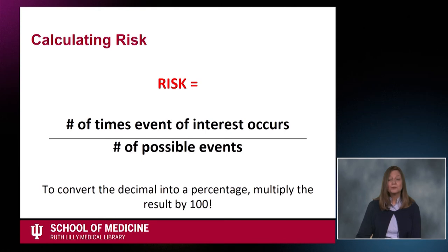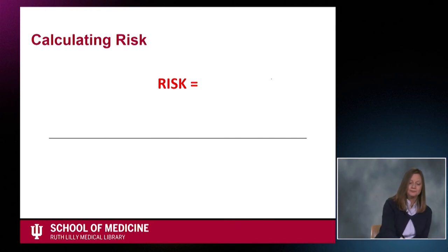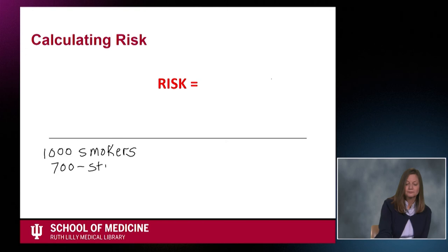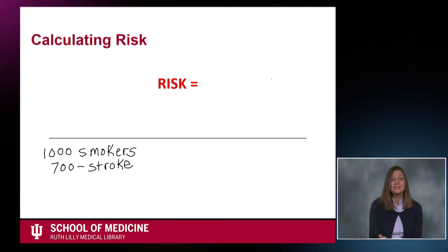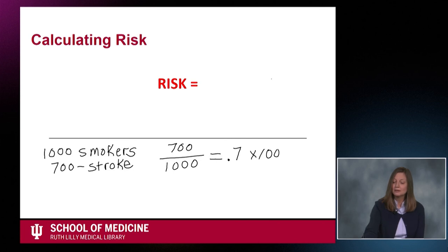The formula for risk as a percentage is the number of times an event happens divided by the number of possible times an event could happen, times 100. Let's put it all together. Let's say you enrolled 1,000 smokers in a study of stroke risk in people who smoke, and 700 of them had a stroke during the study. In this case, the risk of the event of interest — stroke — would be 700 divided by 1,000, which equals 0.7. Multiply that by 100, and that equals 70, or 70% risk.